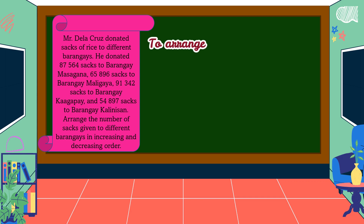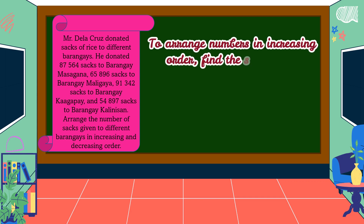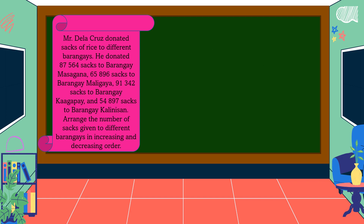To arrange numbers in increasing order, find the smallest to largest number. Let's compare each number. Do you remember how to compare numbers? First, let's count the number of digits in each number. For the first number, how many digits are there? Yes, there are five digits. How about the second number? There are five digits too.